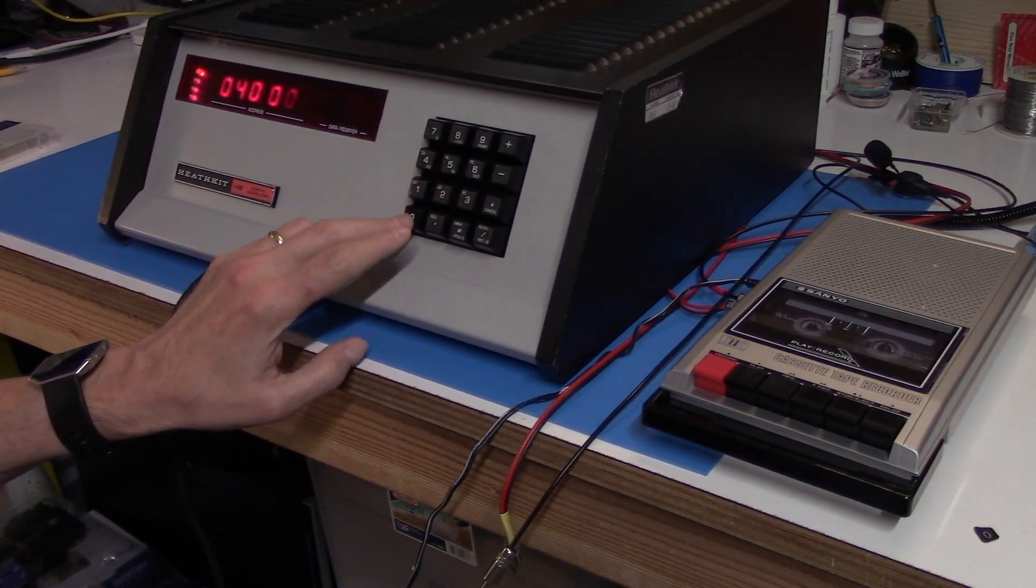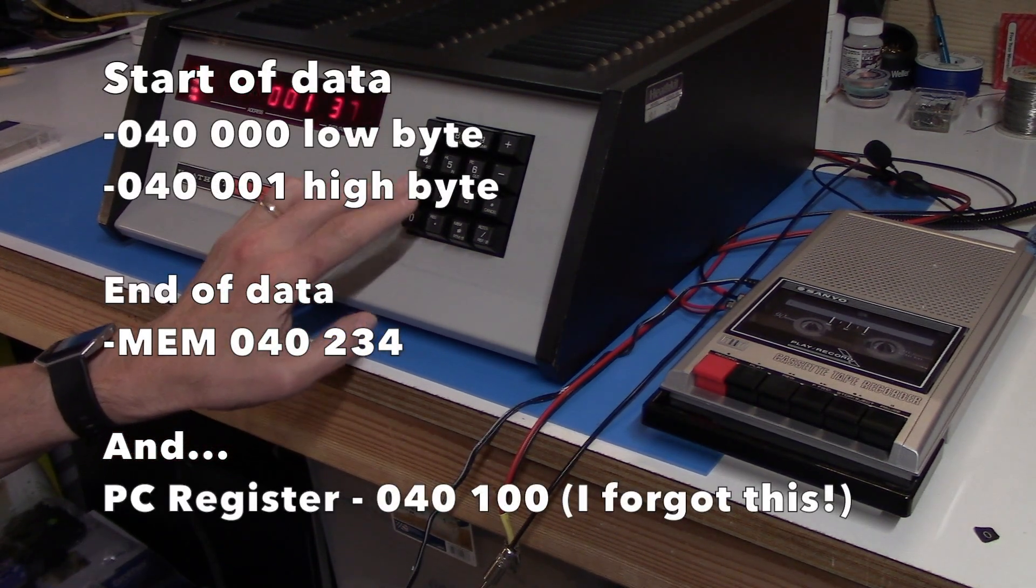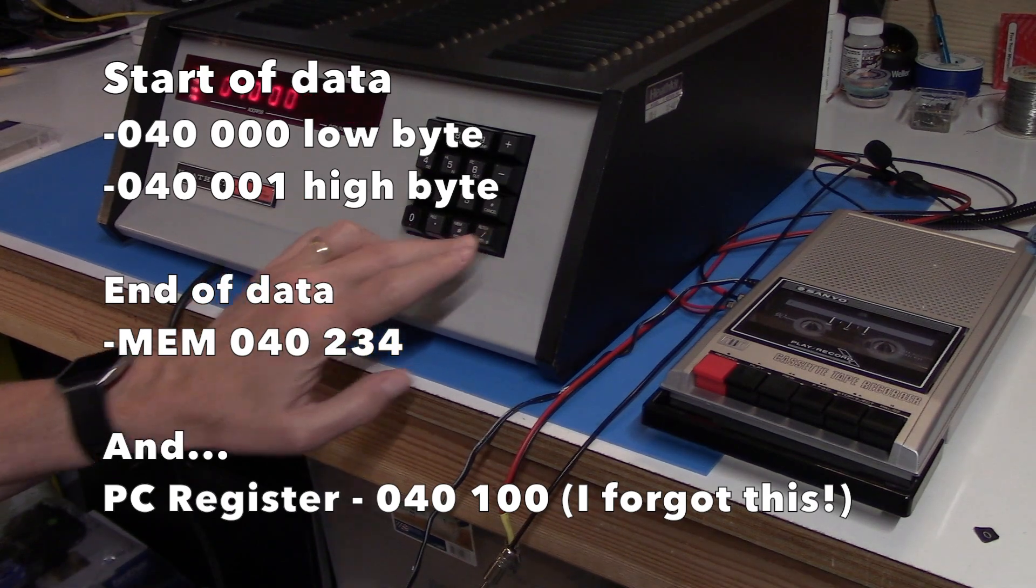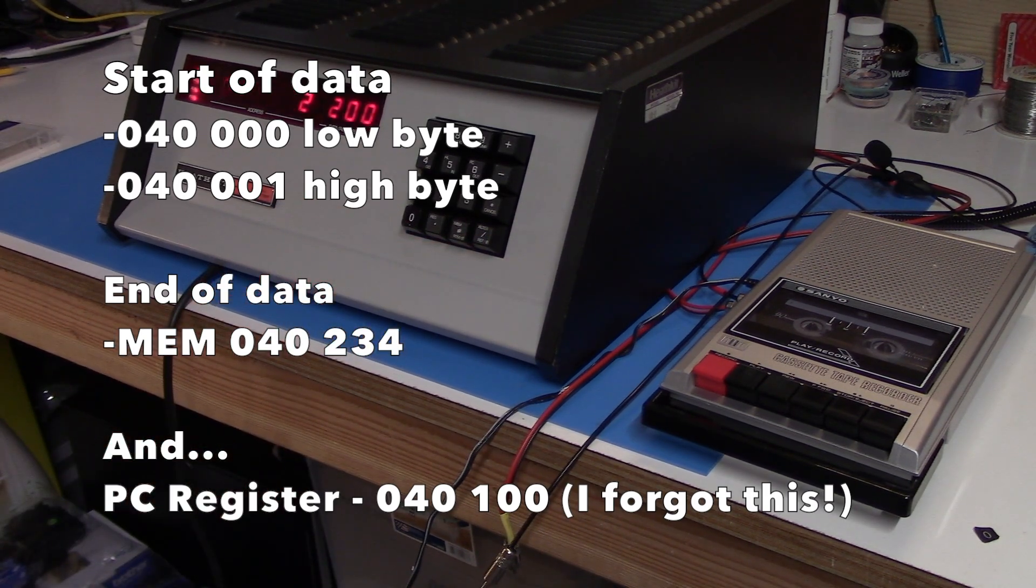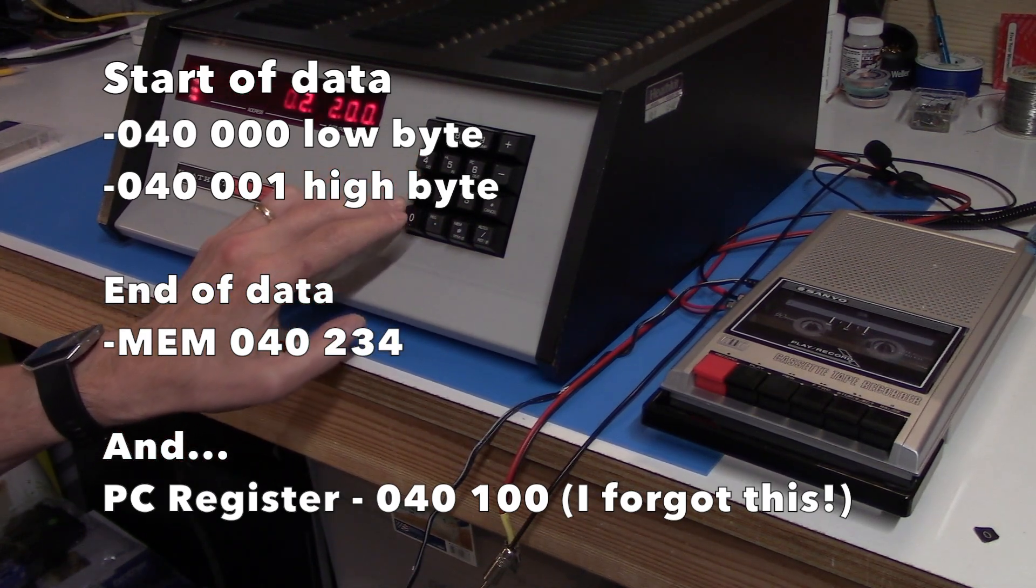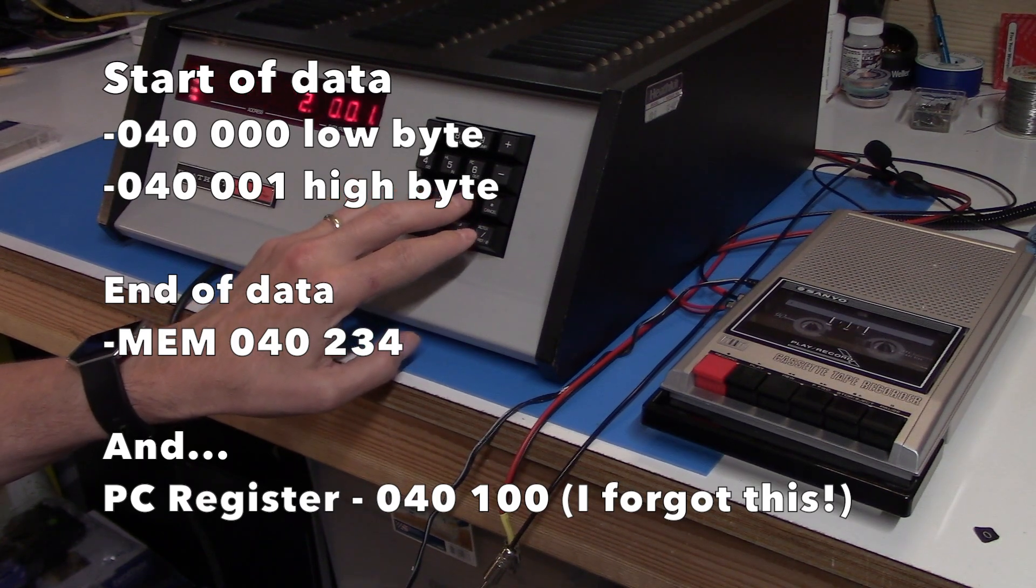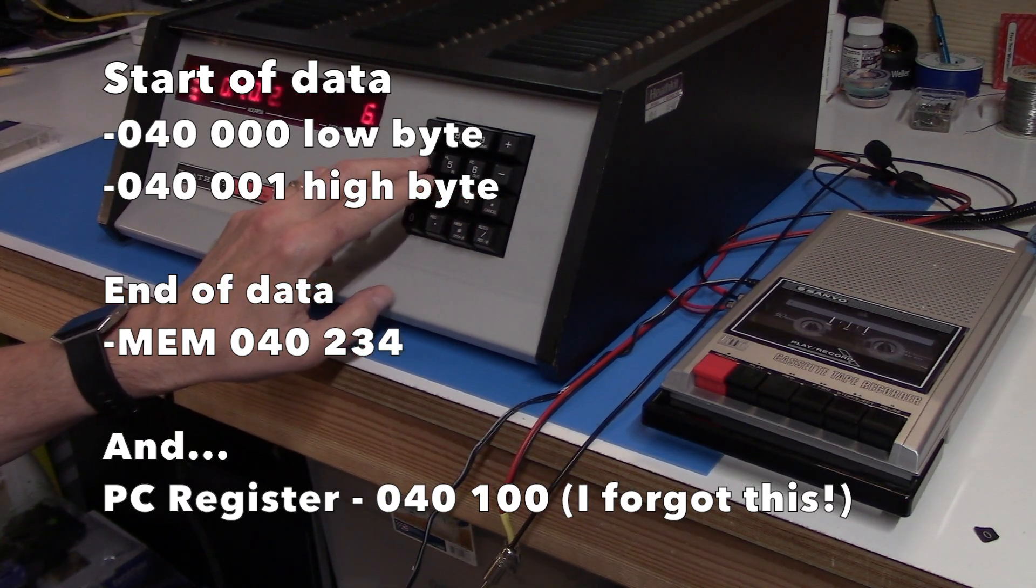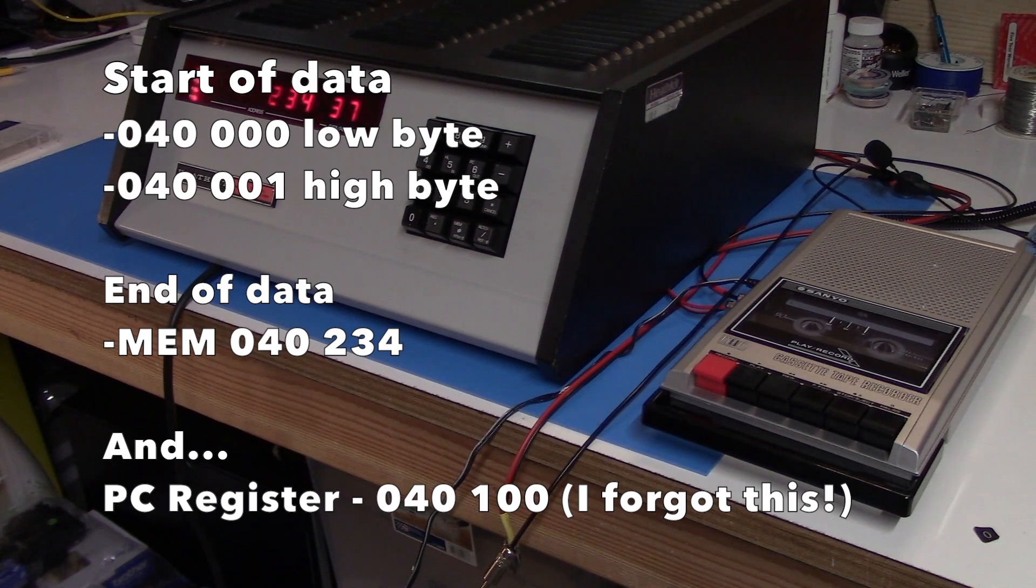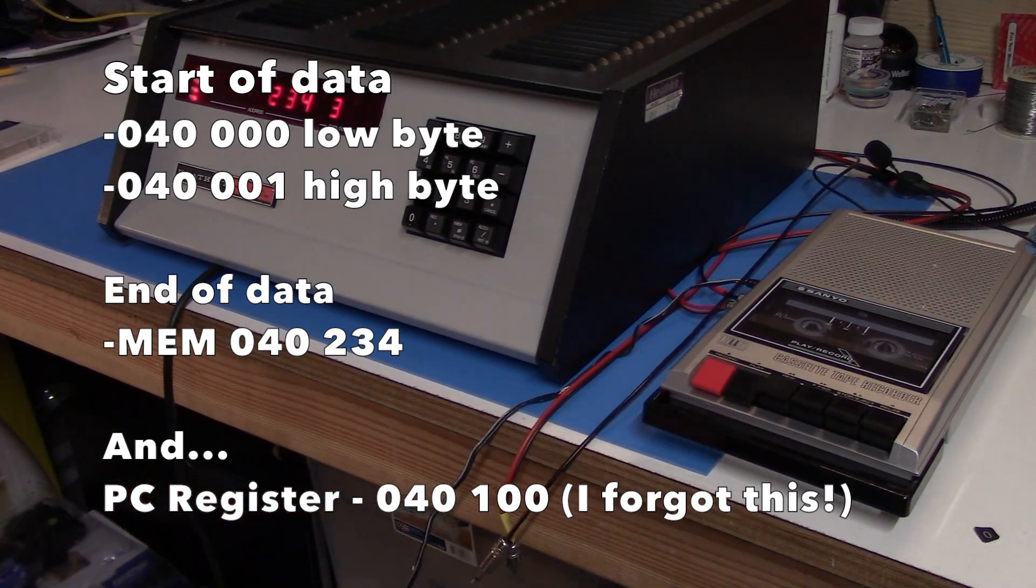Okay there's a few things that I need to do here to be ready to dump my program to tape. One is that in location 040 000 I need to put the low byte of the program starting address, and in 040 001 I need to put the high byte of the program starting address. And then I need to set the memory location for the end of the program.